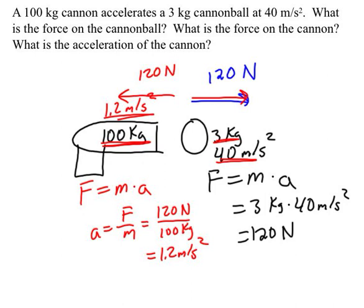In practice, the cannon would be secured so it wouldn't be able to accelerate backwards. But we're ignoring that here — we're just looking at if there were no other forces on this cannon, what would its acceleration backwards be. And that answer is 1.2 meters per second squared.